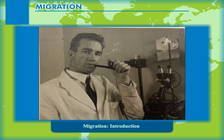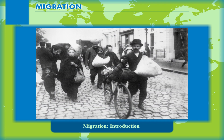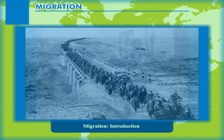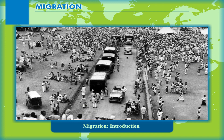Considerable migrations took place during and after World War II. Many migrants were refugees or displaced persons. An exchange of population took place between the newly formed independent states of India and Pakistan, which had been carved out of the British colony of India.